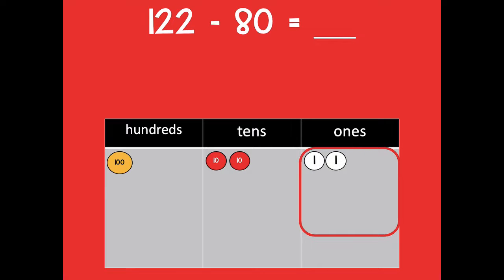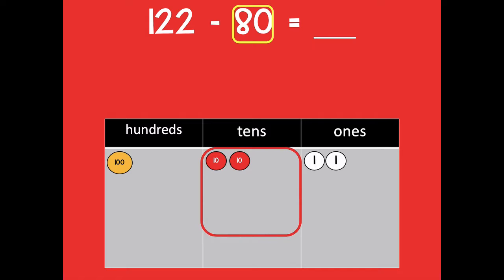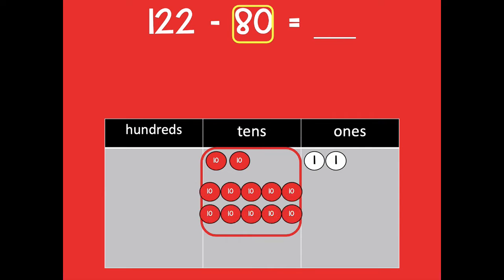Now let's take a look at our ones place — we have two ones. Since I'm subtracting 80, there's a zero in the ones place, so I can take away zero ones from two. No decomposing needed there. But in our tens, I have two tens and I have to subtract eight tens, so I definitely need to decompose. I'll go to my hundreds place and decompose this hundred into 10 tens, because 10 tens equal 100.